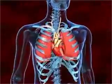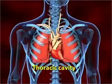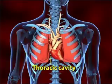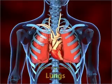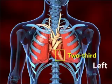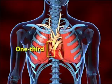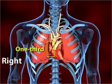The heart is located in the thoracic cavity, in between the two lungs. Two-thirds of the heart is located to the left of the midline of the body, and one-third is located to the right.